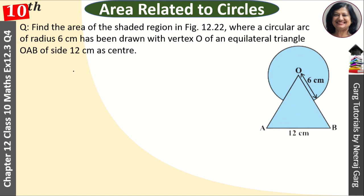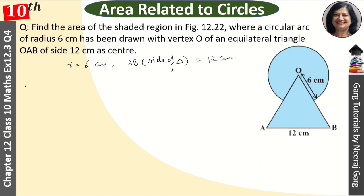We have a radius given that is 6 cm and the side of the equilateral triangle is equal to the side of the triangle. What is given to us? 12 cm.